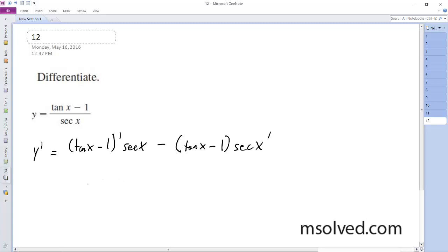So we get derivative of tangent is secant squared x, and then derivative of 1 is nothing, and then times secant, and then secant x, and then tangent of x minus 1.